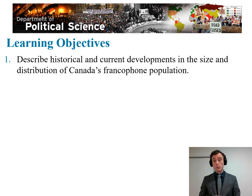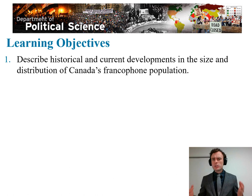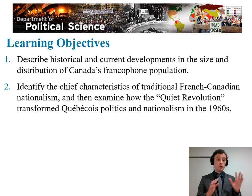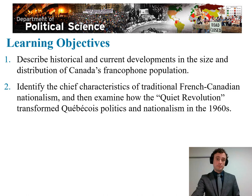We have four learning objectives for today. First, we're going to describe the historical and current developments in the size and distribution of Canada's francophone population. We know that the francophone population is concentrated in Quebec, but its overall size has fluctuated from being a large majority to a significant minority today. Next, we're going to identify the chief characteristics of traditional French-Canadian nationalism, and then examine how the Quiet Revolution transformed this traditional nationalism into a new type of Québécois politics and nationalism beginning in the 1960s.